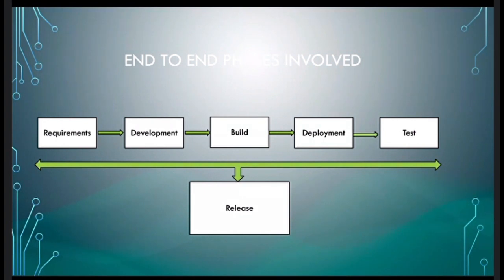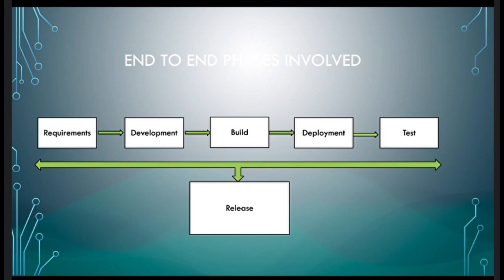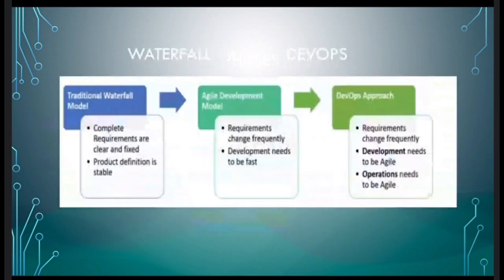Once all testing is done, we release to production. The release is like Android versions — 9.0, then 9.1, 9.2 — we get updates. In the same way, we tag our particular release and put it into production. This is the general SDLC life cycle, and all these things are achieved through different models.